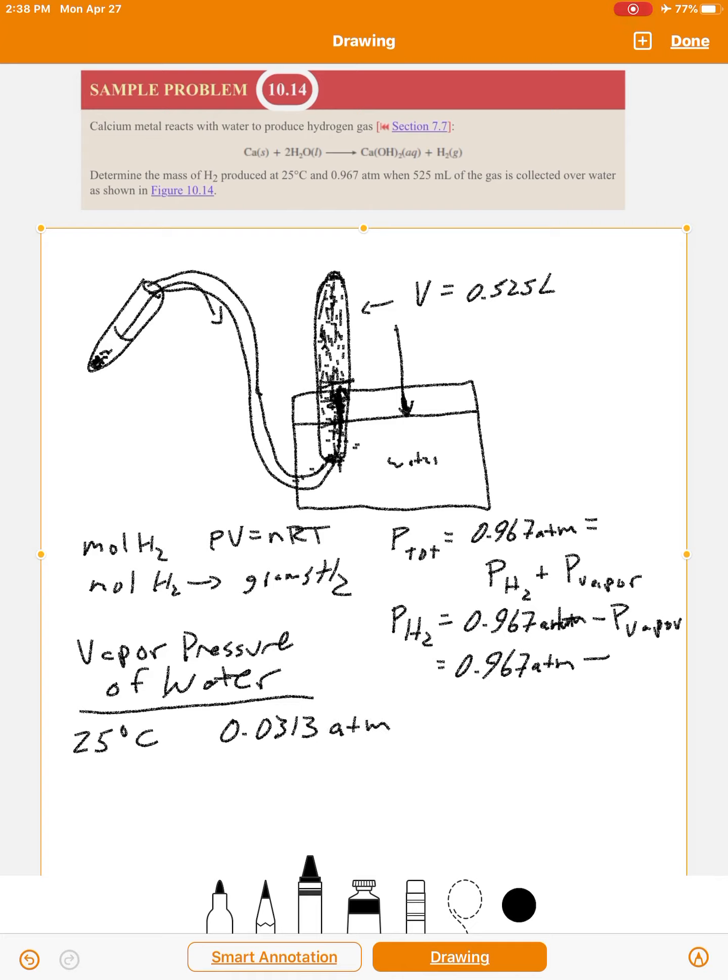Okay, so that means the pressure of the dry hydrogen is 0.967 minus 0.0313. So that's 0.935 atmospheres.